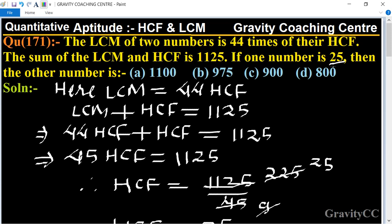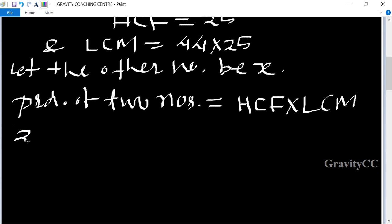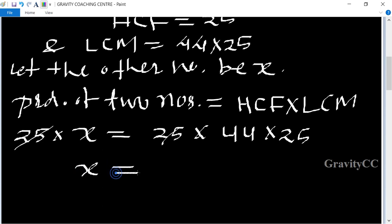So 25 times x equals HCF, which is 25, times LCM, which is 44 times 25. The 25s cancel, so x equals 44 times 25, which equals 1100.